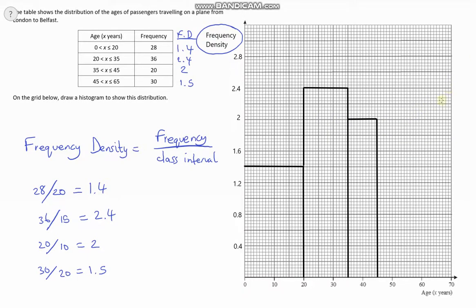And then the final bar. This time we're going up to 65, and it's only 1.5. So that's 1.4, it's going to be halfway between 1.4 and 1.6, which is about there. Then come along to the end, and we have finished. We have constructed our histogram using frequency density.